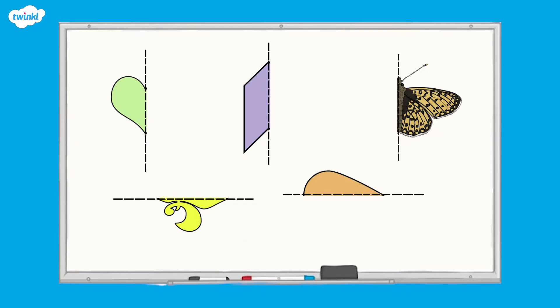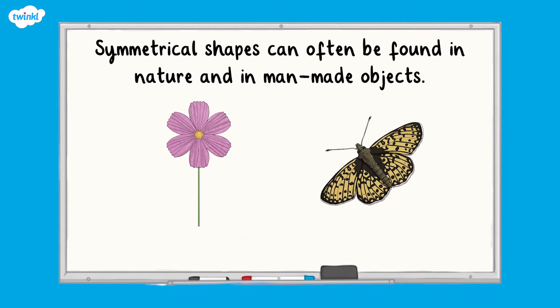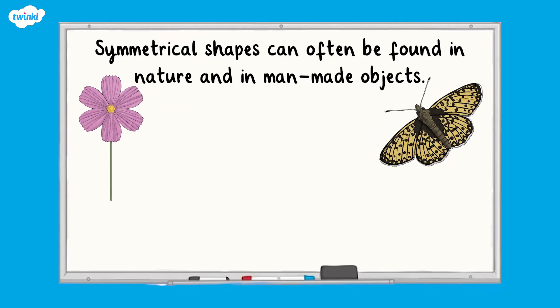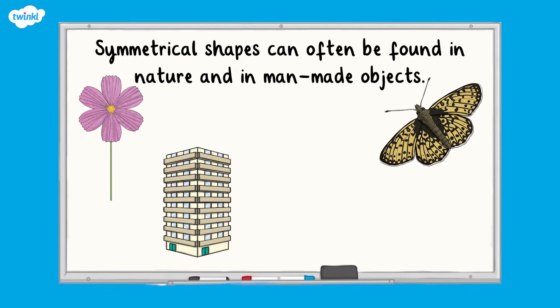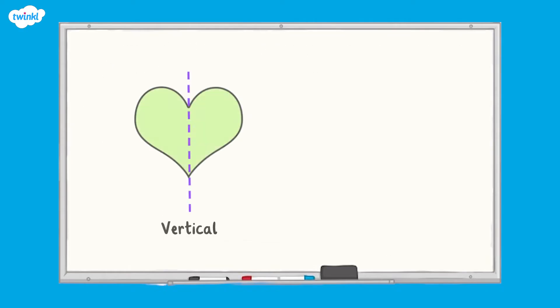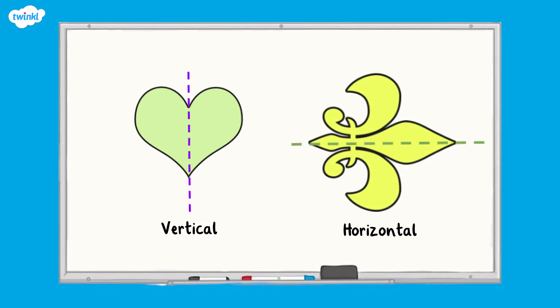Symmetrical shapes are often found in nature, such as in the petals of a flower or the wings of a butterfly. They can also be found in man-made objects, such as in the design of buildings or furniture. But how can we spot lines of symmetry in shapes, especially when the line of symmetry may not be vertical or horizontal? Let's start by looking at how we might find a line of symmetry using a practical method.